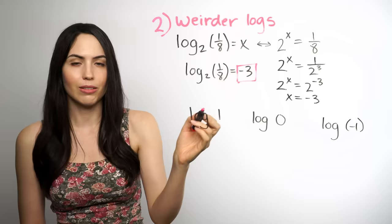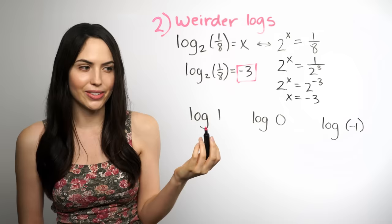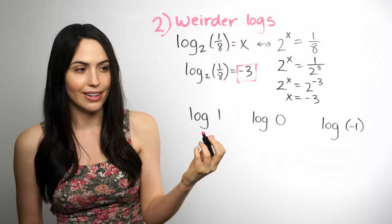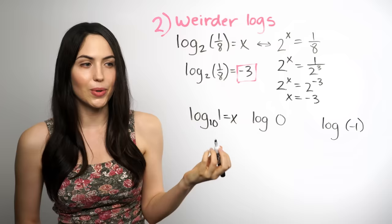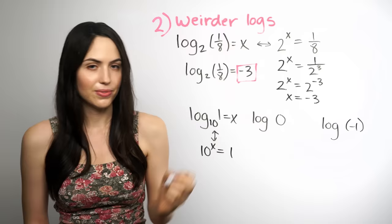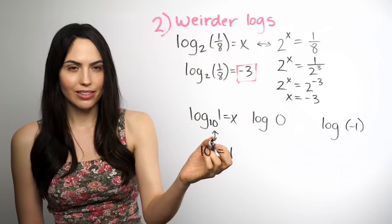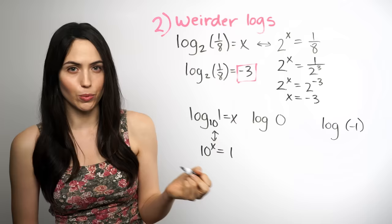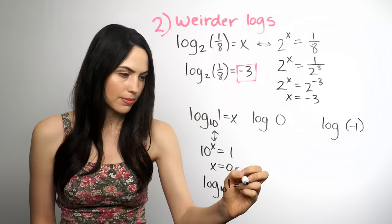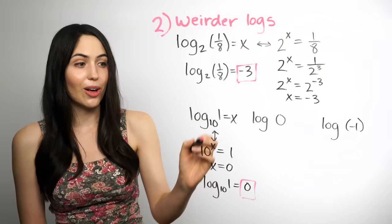What about log of 1? It looks so simple and yet it can be very confusing. If there's no little base, remember it's 10 — it's a hidden 10, so write it as log base 10. Set it equal to x. In exponential form, this is 10 to the x power equals 1. Any number raised to the 0 power equals 1, so 10 to the 0 power equals 1 — that's the only way that will happen. So that whole log is just equal to 0.